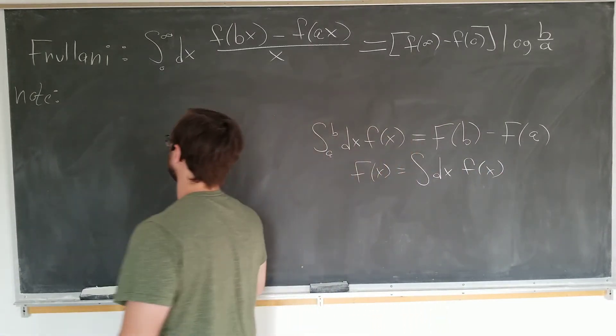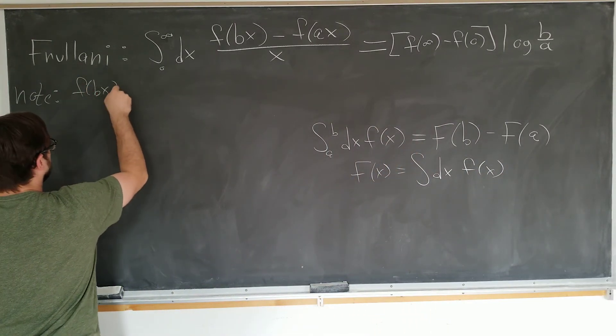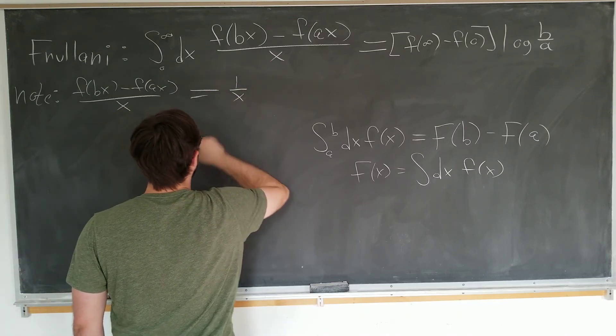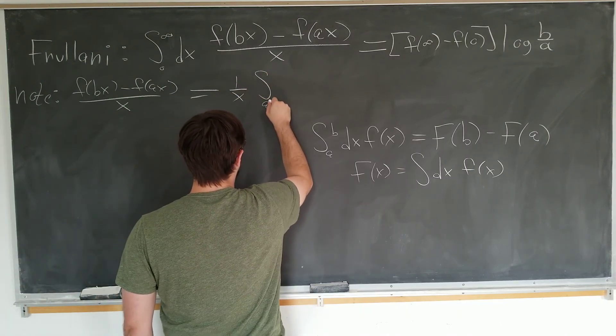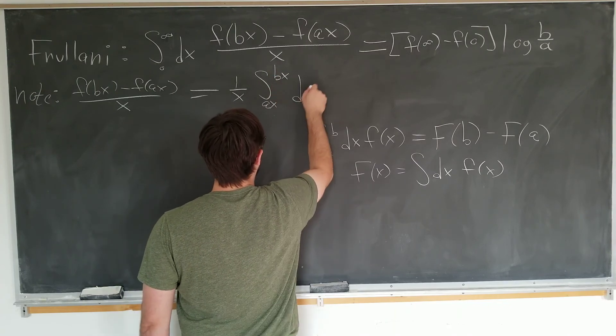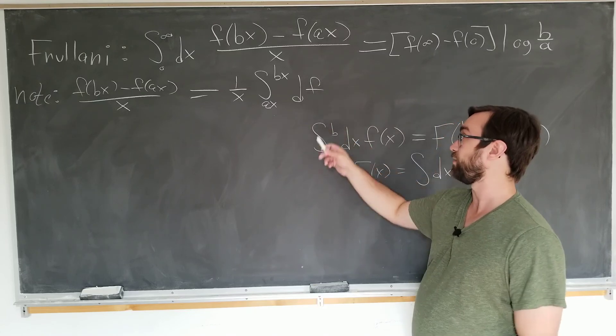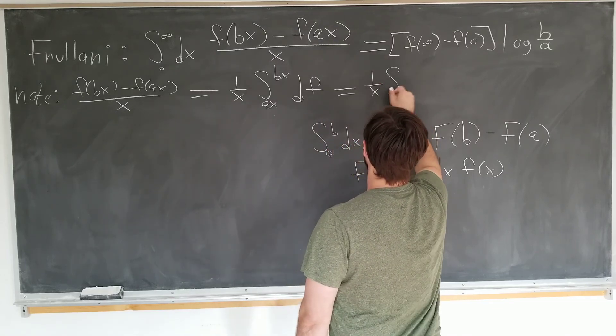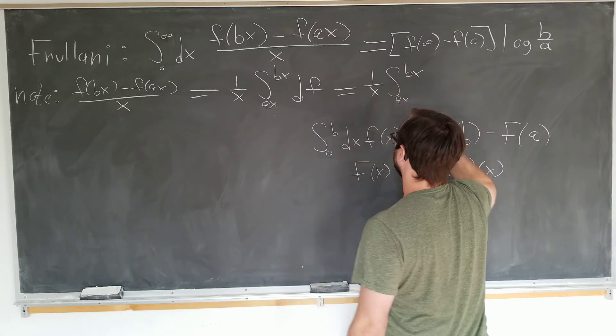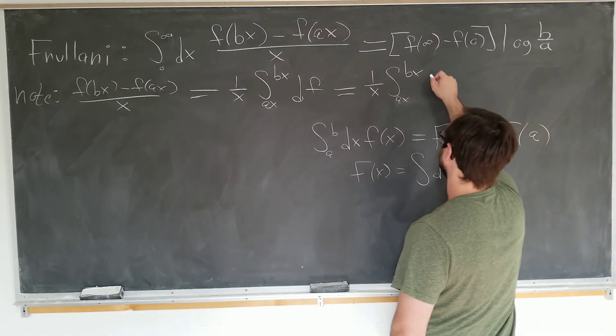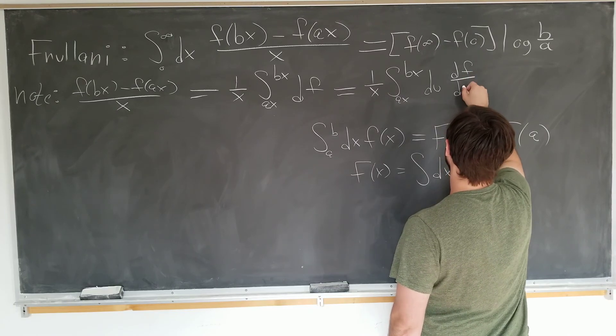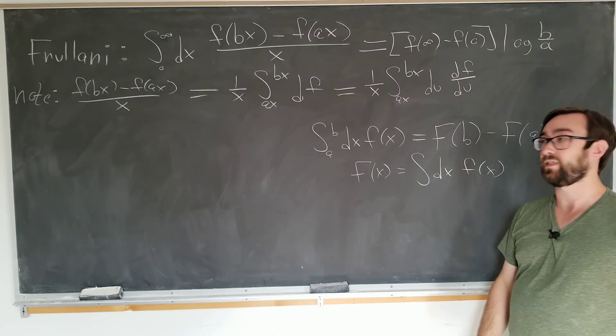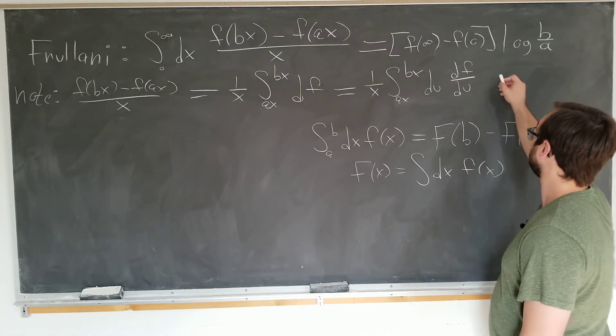We need the formula that we have a to b dx of f of x. We're going to have the anti-derivative of f evaluated at b minus anti-derivative of f evaluated at a. And we're going to see how we can apply this here, where f is obviously the definite integral. Let's see what we can do here. The integrand f of bx minus f of ax over x can be, if we take 1 over x along for the ride, simply written as 1 over x integral from ax to bx of df.